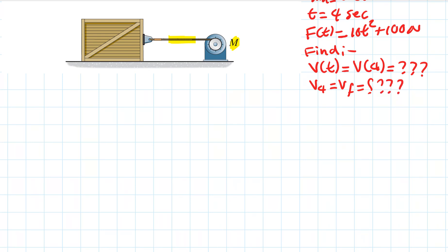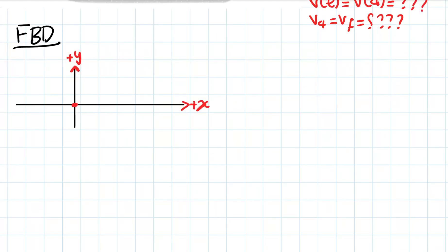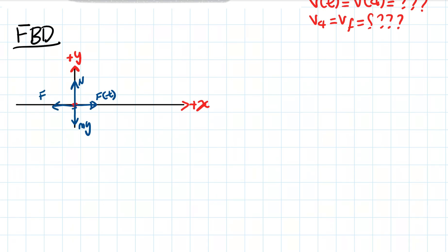Next we draw the free body diagram. We represent the crate as a particle. The crate has a weight of mass times gravity. Since the crate is on a surface, that surface exerts a normal force on it. There is a cable pulling the crate as a function of time. Given the coefficient of friction, there is also a friction force opposing the movement of the crate.